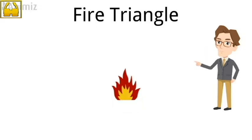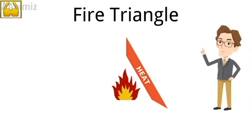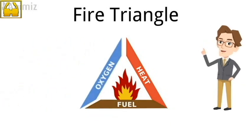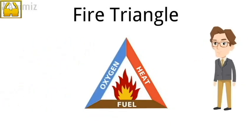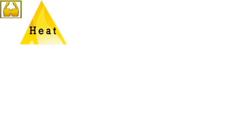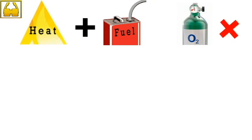Fire is a chemical reaction between three elements: heat, fuel and oxygen. Without any of these elements, fire cannot take place. For example, if heat and fuel are present, fire cannot take place without oxygen.